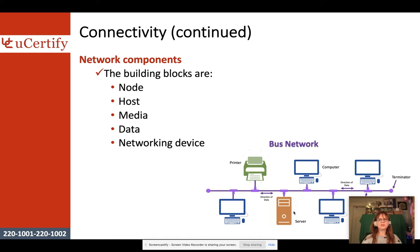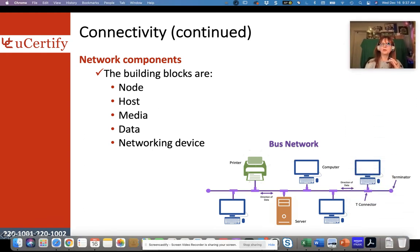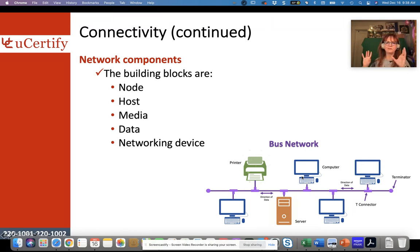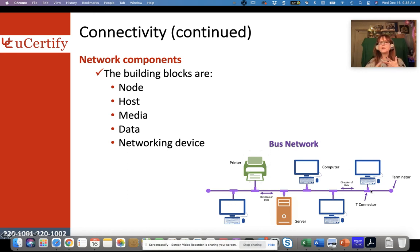Network components — the building blocks of the network — are the node, the host, the media, data, and the networking device. A node is anything on a network that is using the network connection: a computer, a printer, a server. A host is going to be like your server — what's hosting files, what's hosting your printer. Media is your cable or your Wi-Fi connection point. Data is whatever you're sharing on the network, the packets being sent among the different nodes. And the networking device is your network interface card, hubs, switches, routers — all the things that actually make the data move around the network.